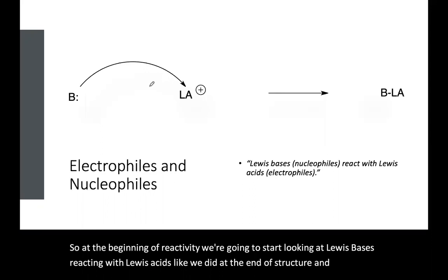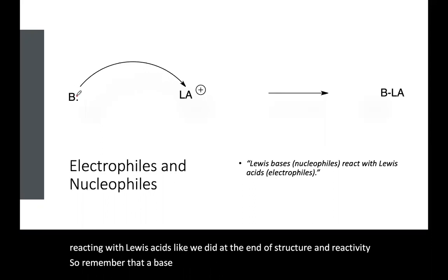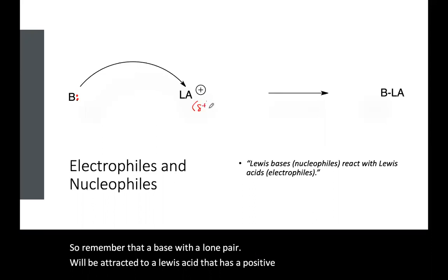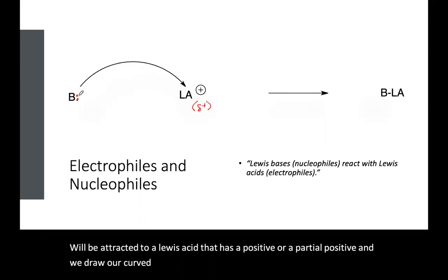Remember that a base with a lone pair will be attracted to a Lewis acid that has a positive or a partial positive, and we draw our curved arrows always originating from the lone pair going towards the positive.